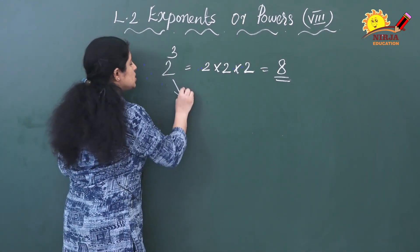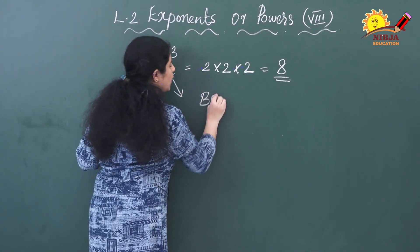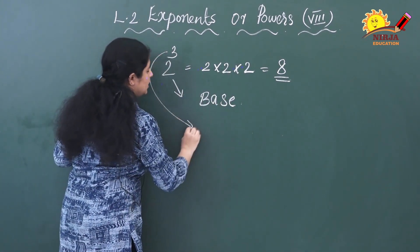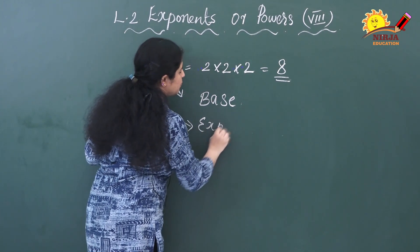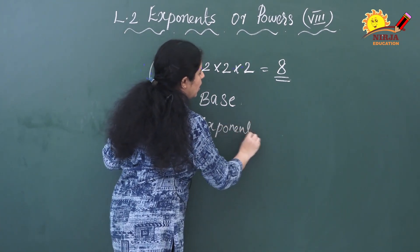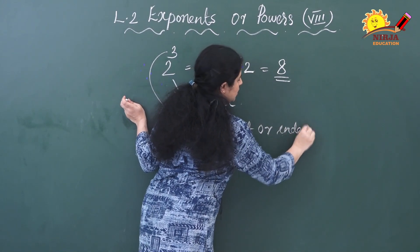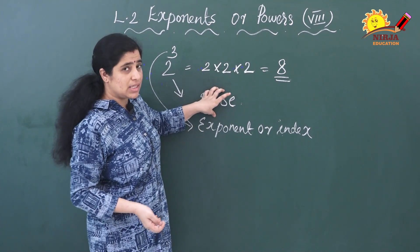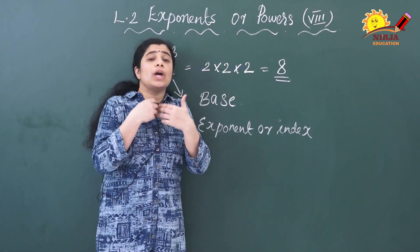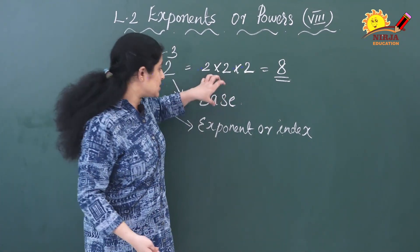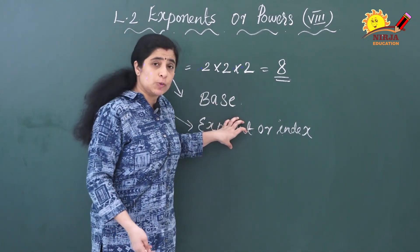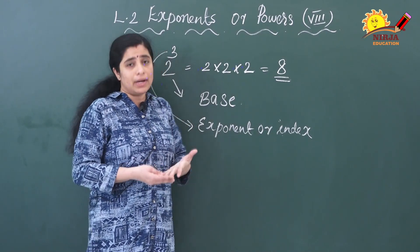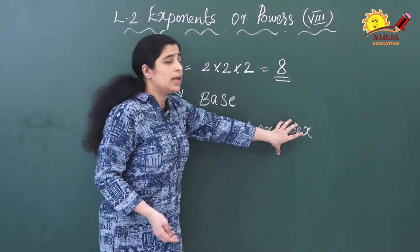Here, this 2 is known as the base and 3 is the exponent or index. The other name of exponent is index. Here 2 is the base — that means the number which we are multiplying. That is the base. And 3 is known as the exponent or index, that means how many times we are multiplying.